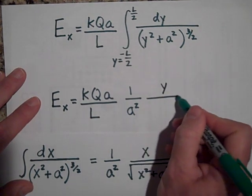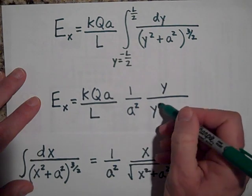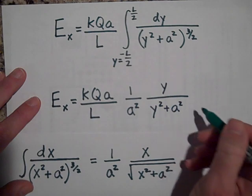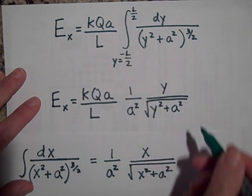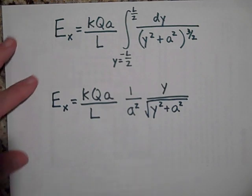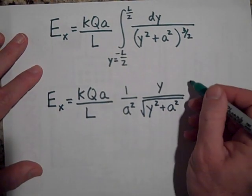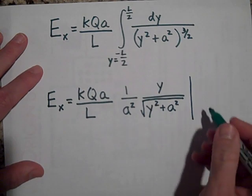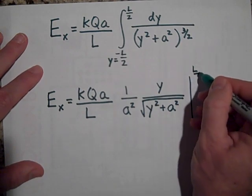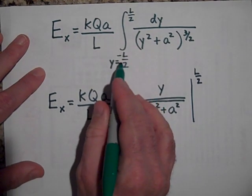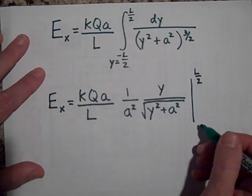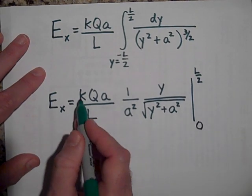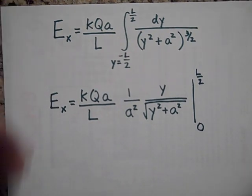And now I'm going to put the solution to this integral. It's 1 over A squared, and then I'm going to put in not X—this says X, but my variable is Y—so I'm going to put in Y, and then it's going to be Y squared, not X squared but Y squared, plus A squared, square root it. Okay, so there you have it. And then let me put on my boundary conditions.